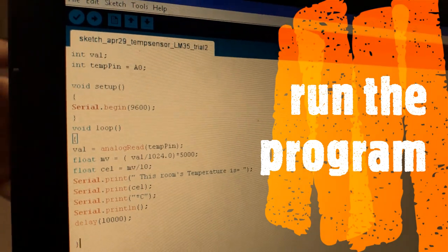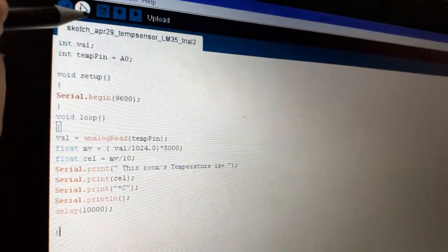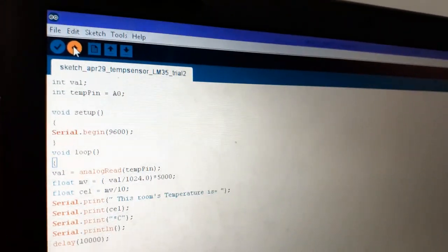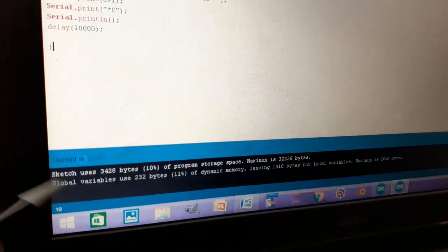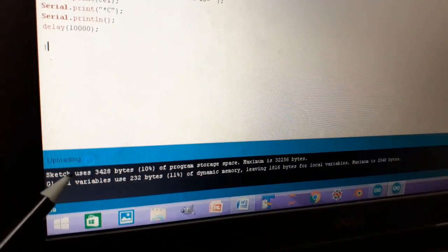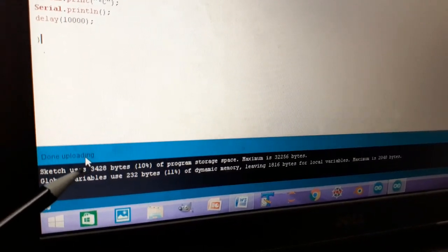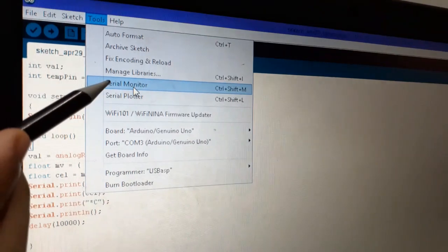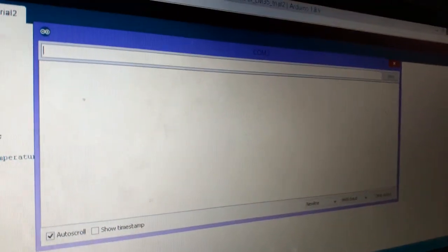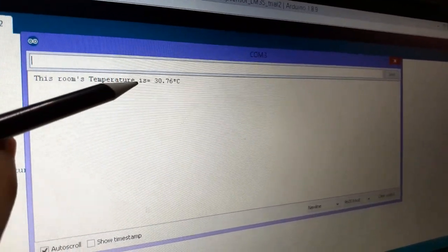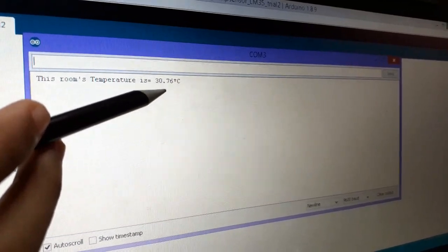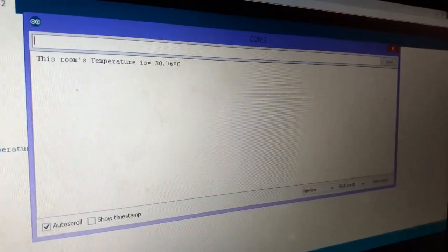Now, it is time to run the program. So, go to this upload icon. Now, your program is compiling. It is uploading now. And done uploading. After this, go to the tools and select serial monitor. Here, the room temperature is shown as 30.76 degrees Celsius.